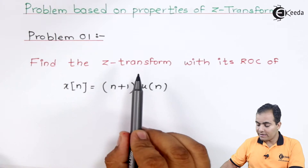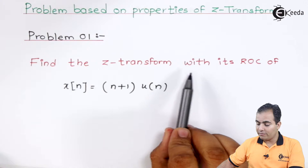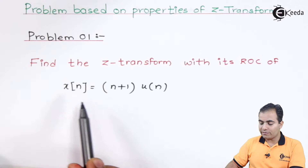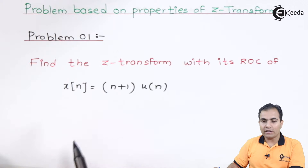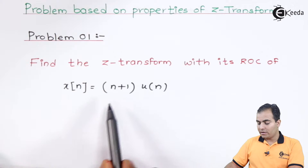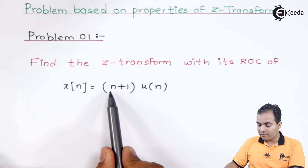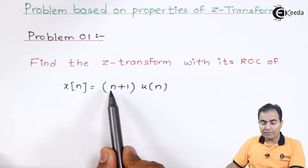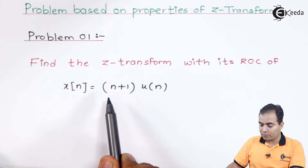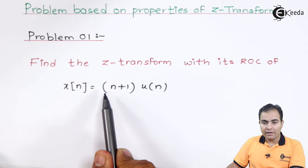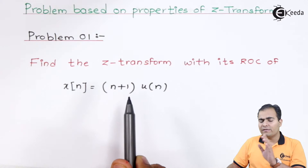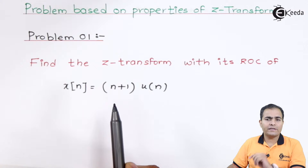Find the Z-transform and its ROC of x(n) = (n+1)·u(n). First, we are going to multiply u(n) inside the bracket. What you will get is n·u(n) and then simply u(n).